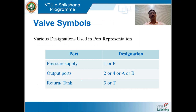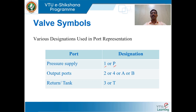We shall move on to valve symbols and discuss how the ports are designated. For the pressure supply port, it is designated as 1 or P. For output ports, it is designated as 2, 4, A, or B. For the return or tank line, it is designated as 3 or T.